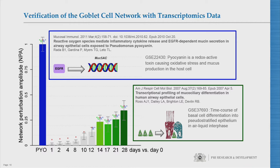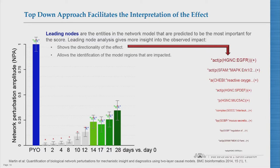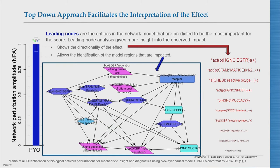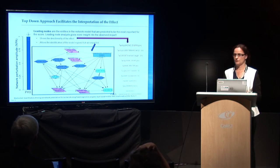The NPA score is without sign — it just indicates whether there is an impact and whether it is specific. But you can do more with a leading node analysis, a top-down approach. Leading nodes are the nodes in the network that, when impacted, are the most important for the score — they account for 80% of the score. The leading node analysis can give you directionality; for example, EGFR activity is inferred as up. You can also pinpoint the leading nodes back in the network, which is important for mode-of-action studies, since one drug may impact one side of the network and another drug a different side.